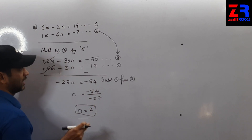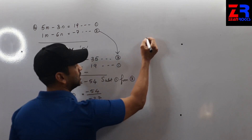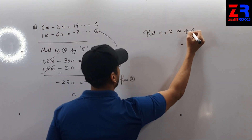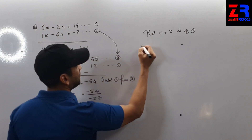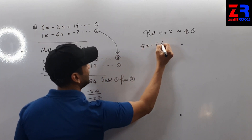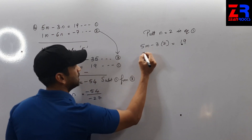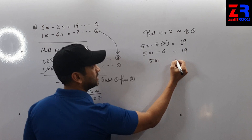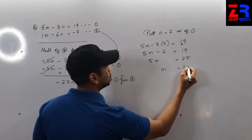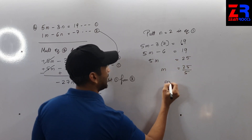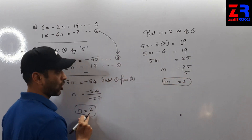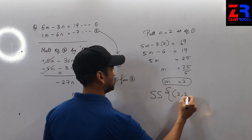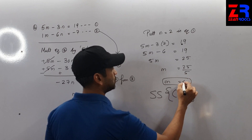n = 2 is not the final answer. Putting n = 2 in equation 1: 5m − 3(2) = 19, so 5m − 6 = 19, therefore 5m = 25, m = 5. The solution set is (5, 2).